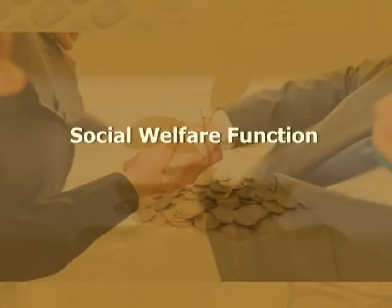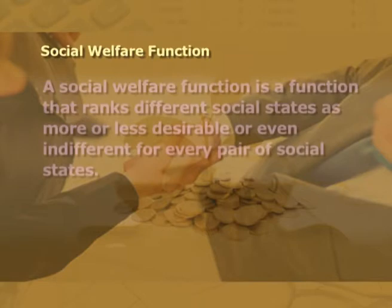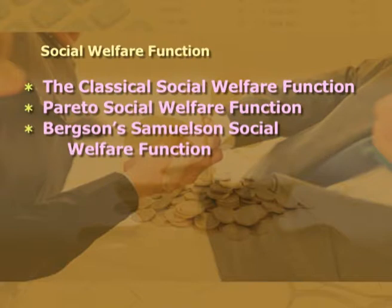Let us discuss social welfare function. A social welfare function is a function that ranks different social states as more or less desirable, or even indifferent, for every pair of social states. The concept of social welfare function is explained by various economists. First is the classical social welfare function. At first, social welfare function was put forward by Bentham, Pigou and Marshall. According to them, social welfare is the sum of cardinal utilities obtained by all members of a society.